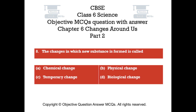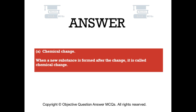Question number 8. The changes in which a new substance is formed is called — Option A: chemical change. Option B: physical change. Option C: temporary change. Option D: biological change. The right answer is Option A: chemical change. When a new substance is formed after the change, it is called a chemical change.